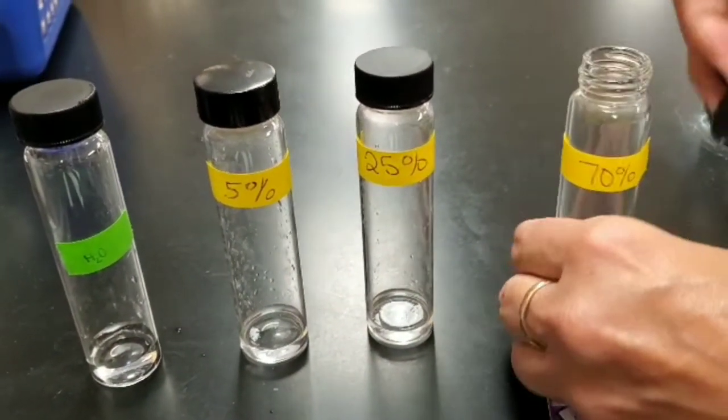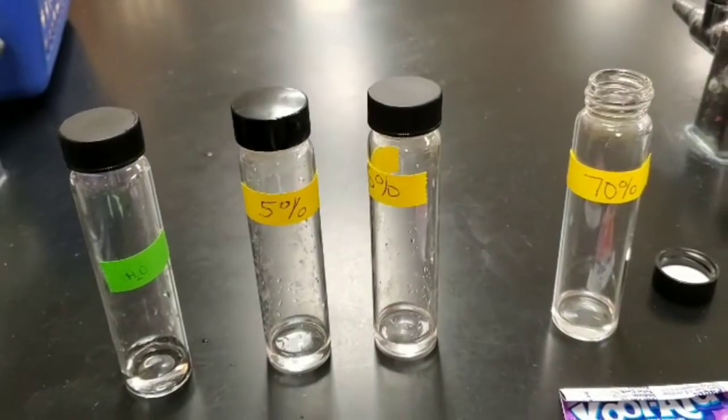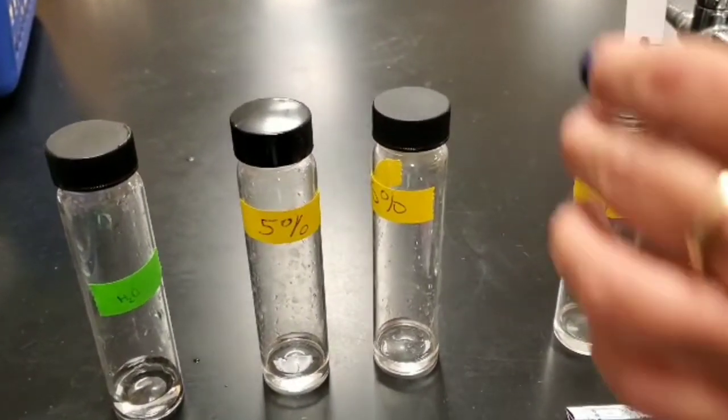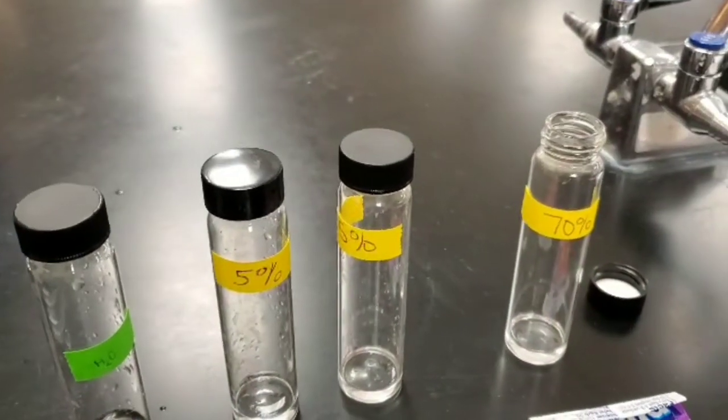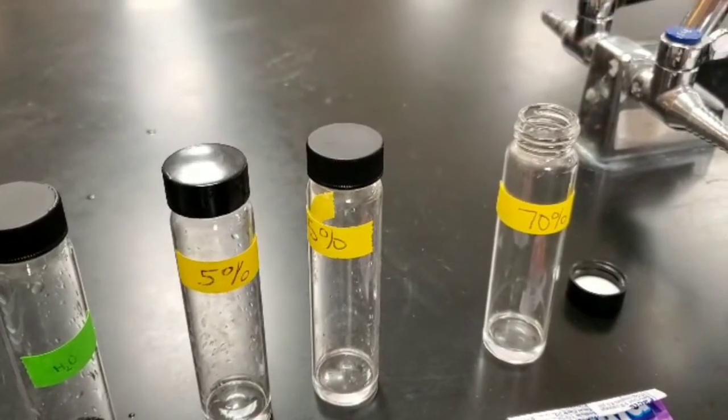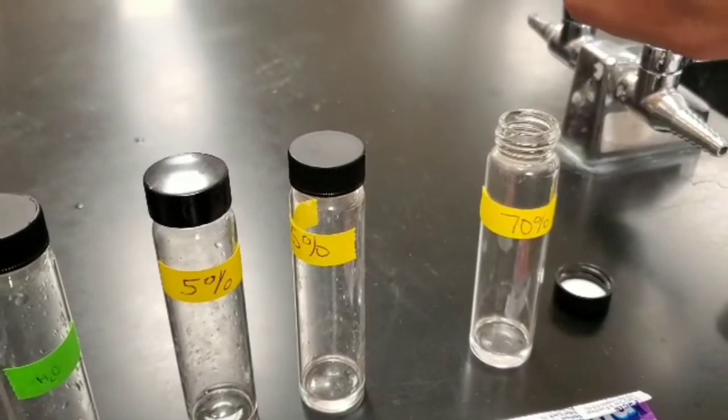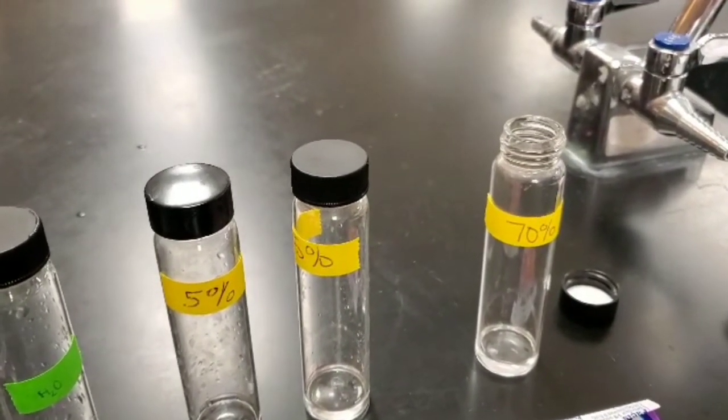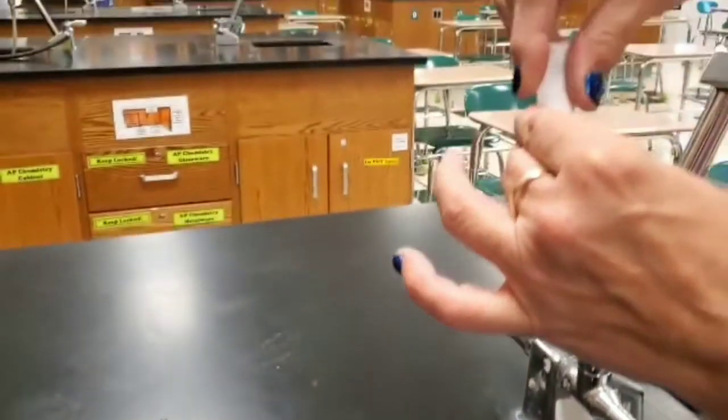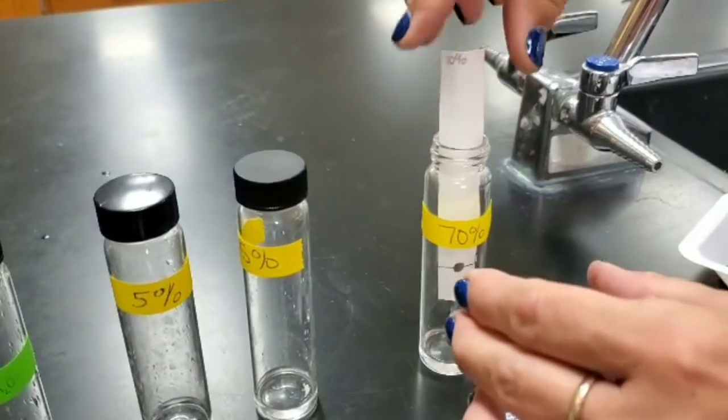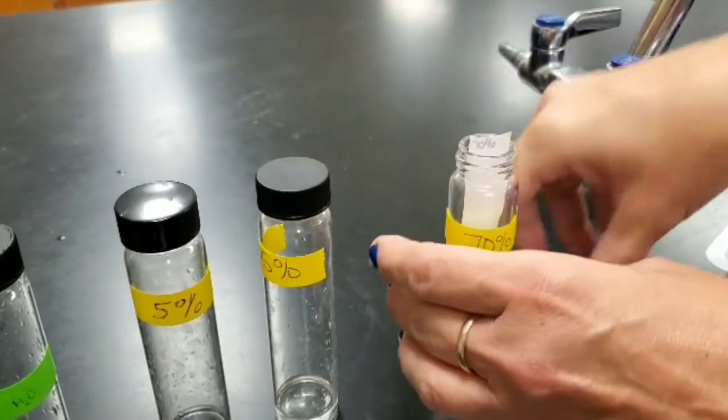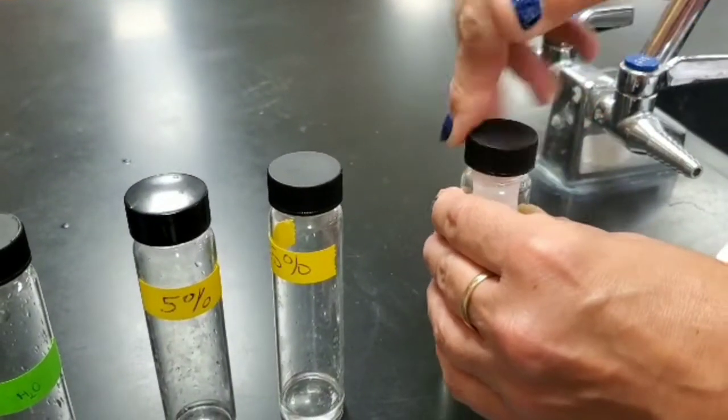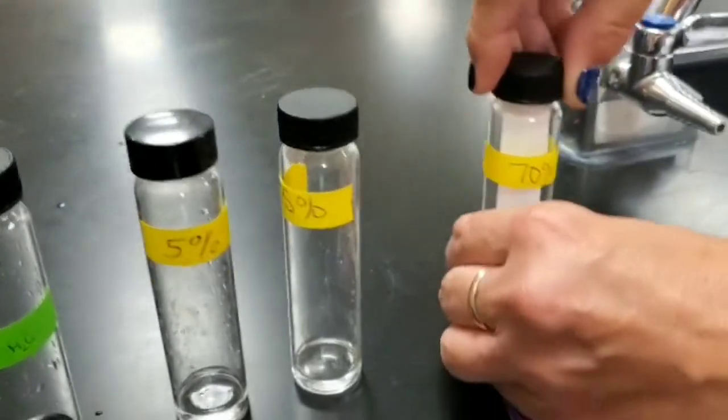The solvents we are using are 70% isopropyl, 25% isopropyl, 5% isopropyl, and water. The chromatography paper that we're using is made up of cellulose, which is a polymer of simple sugar glucose and is thus very polar because of the OH groups found in the glucose.